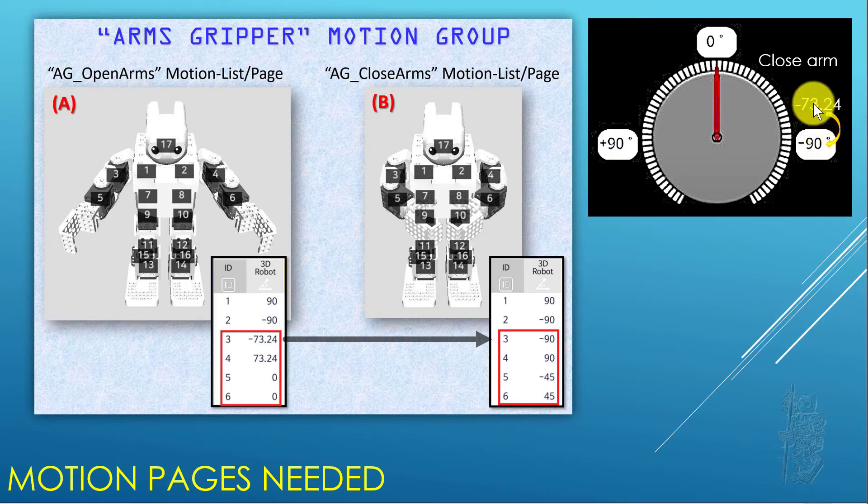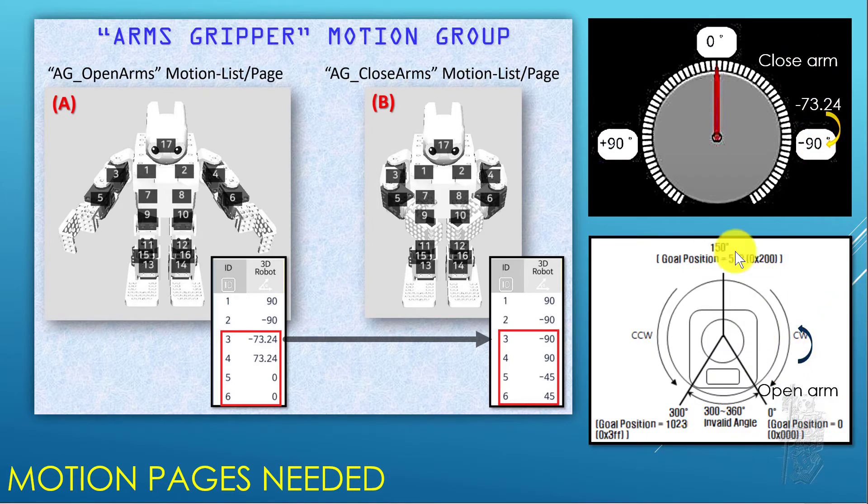Therefore, to open the arm, you need to move it counterclockwise. So counterclockwise in the position of the joint offset, meaning the joint offset value had to be positive. So to open servo number 3, we need to increase its joint offset. That's the key point I want to show.